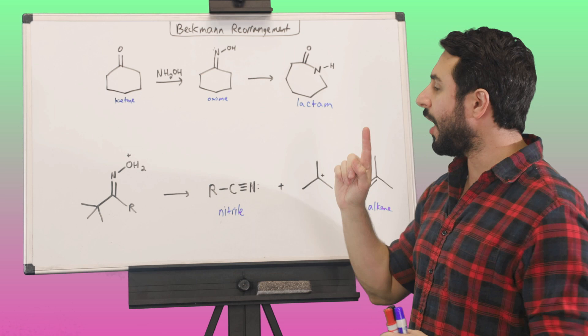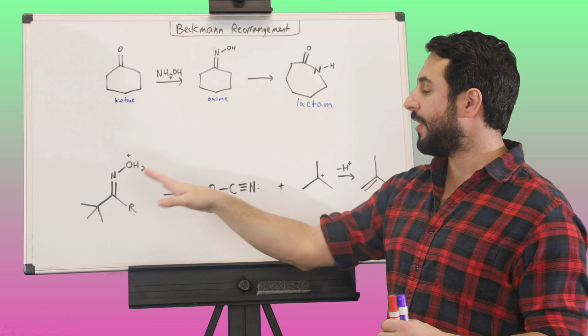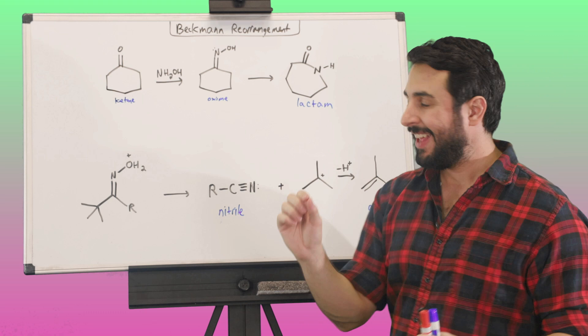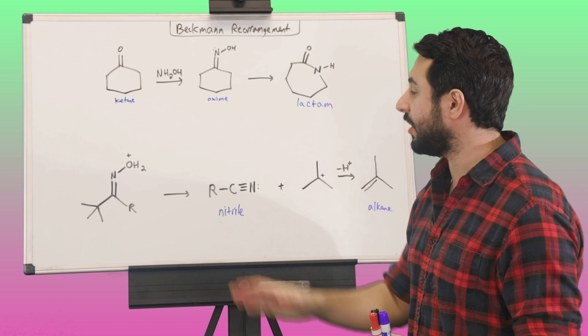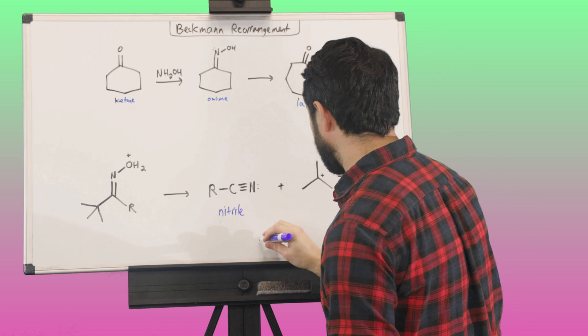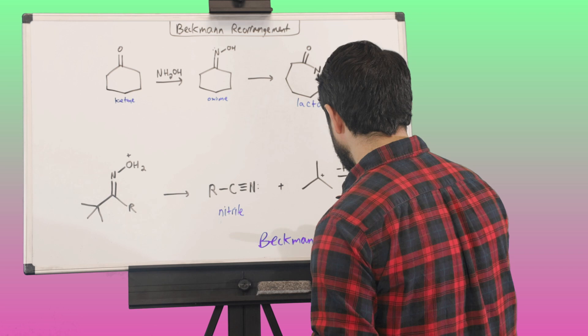One limitation that we also want to talk about with the Beckman rearrangement. Remember that we said that the R group that migrates, that forms the new bond to the nitrogen, is typically going to be the one that is more substituted, because it has to sustain some partial positivity in the transition state as it migrates, as it coordinates to the nitrogen. And so, we do want to be aware of something called Beckman fragmentation. So, this is actually Beckman fragmentation.